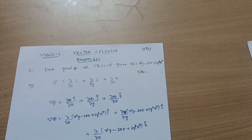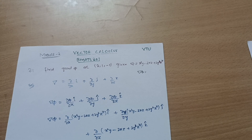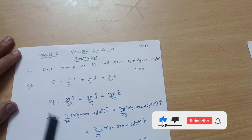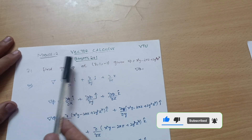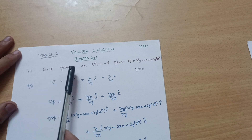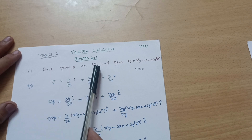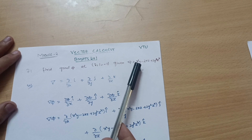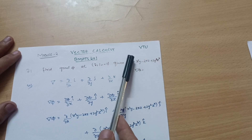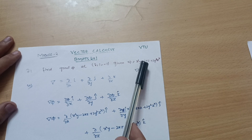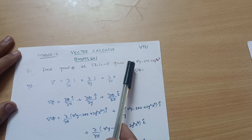Hello everyone and welcome back to my channel. In this video I will explain the vector calculus part, Module 2, for CSC stream students and allied branches ISC and AIML. The subject code is BMAT S201. We are supposed to calculate the gradient of φ at the point (2, 1, -1), given φ = x²y - 2xz + 2y²z⁴. This is called the scalar differential function.